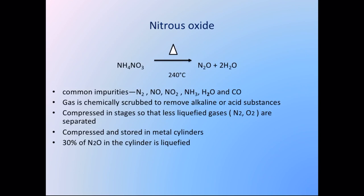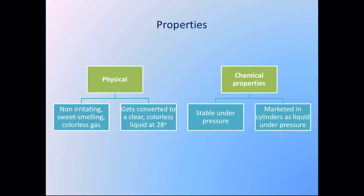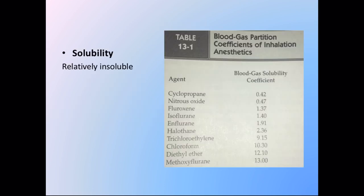Nitrous oxide is compressed in stages so that less liquefied gases are separated, then compressed and stored in metal cylinders. Thirty percent of the nitrous oxide in the cylinder is present in liquefied form. Its physical properties include being a non-irritating, sweet-smelling, colorless gas that converts to a clear colorless liquid at 28°C. It is stable under pressure and marketed in cylinders as a liquid under pressure. Nitrous oxide is relatively insoluble.